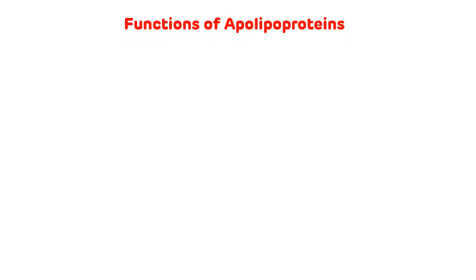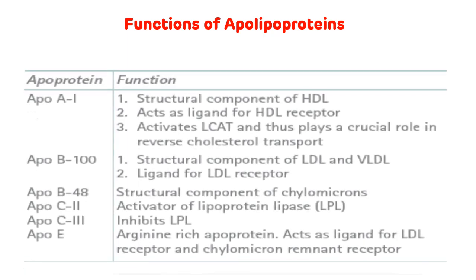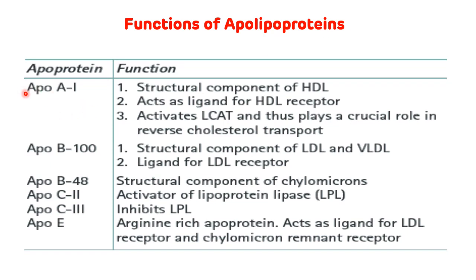Now we will see the functions of apolipoproteins. The protein component of lipoproteins is known as apolipoproteins. ApoA1 is the structural component of HDL and acts as a ligand for the HDL receptor. Another important function of ApoA1 is that it activates lecithin-cholesterol acyltransferase (LCAT), thus playing a crucial role in reverse cholesterol transport. ApoB100 is the structural component of LDL as well as VLDL and acts as a ligand for the LDL receptor.